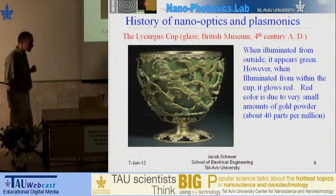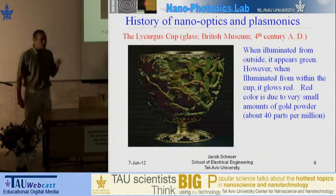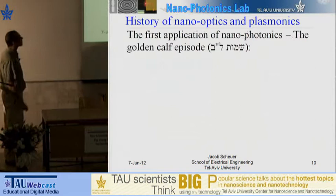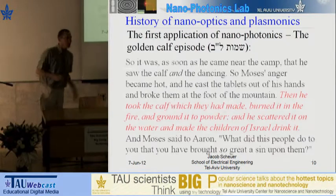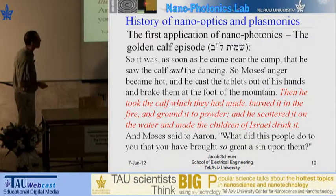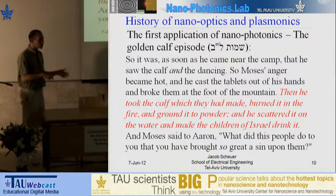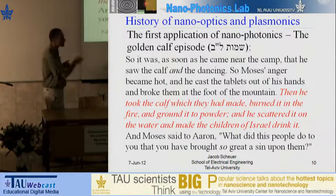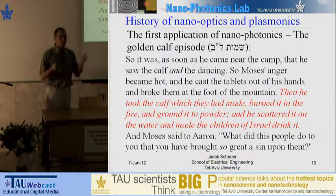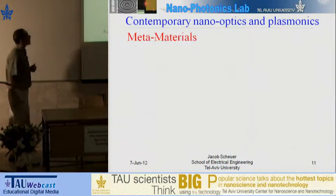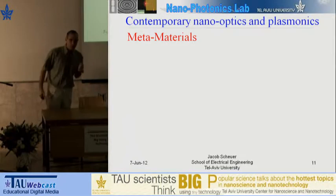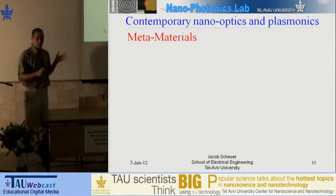As was pointed out by a colleague of mine recently, the history of nanophotonics can be traced back to the age of the Bible — specifically the episode of the Golden Calf, Book of Exodus, Chapter 32. Moses goes down from Mount Sinai, sees the children of Israel celebrating around a golden calf, takes the calf, burns it, grinds it into powder, mixes it with water, and makes them drink it. What we have here is a solution of water with very tiny gold nanoparticles, which probably gave the water a reddish, blood-like color. Today we have better technologies, and golden calves are way out of fashion.